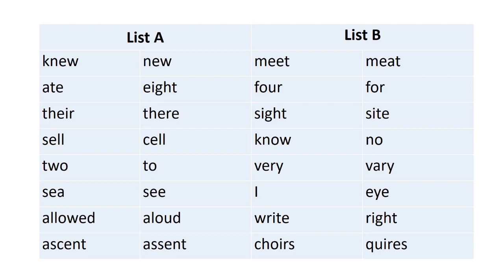More homophone examples: 'assent' and 'ascent.' 'Meet' and 'meat.' 'For,' 'four,' and 'fore' — if we stress the preposition it's pronounced 'for'; unstressed it sounds like 'fur.' 'Sight,' 'site,' and 'cite.' 'Know' and 'no.' 'I' and 'eye.' 'Write' and 'right' — 'I write with my right hand.'